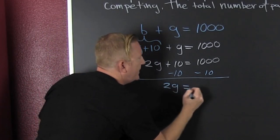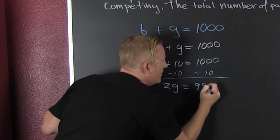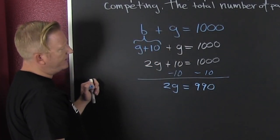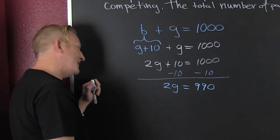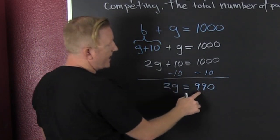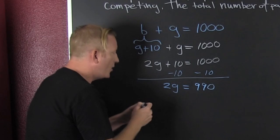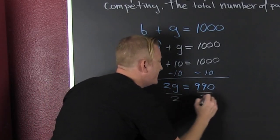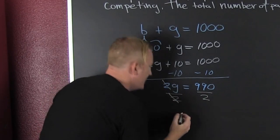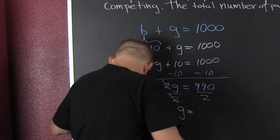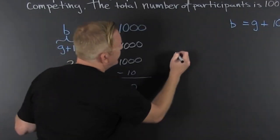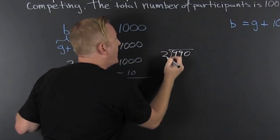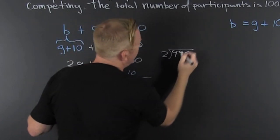2g equals — wait for it — 990, because if I take 10 and add it to 990 I get a thousand. Now I'm going to divide both sides by two. And g turns out to be 990 divided by 2.